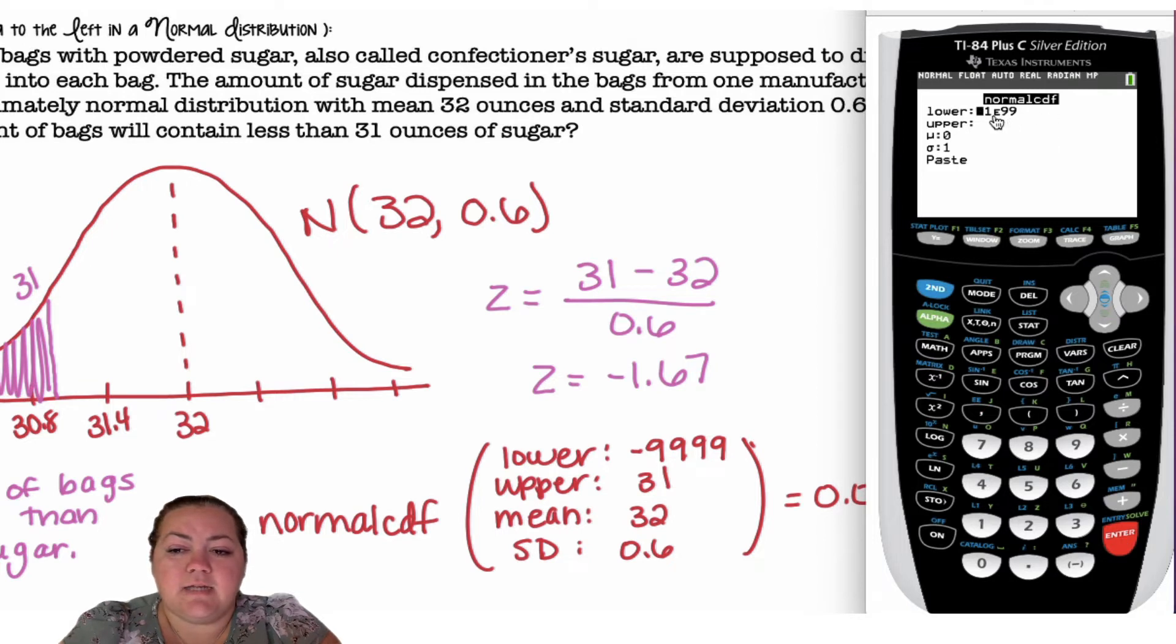I could leave my lower bound as negative 1e to the 99. I'm going to go ahead and put negative 99999. My upper bound is 31, my mean is 32, and my standard deviation is 0.6. Let's paste, enter, and we get our answer 0.0478.